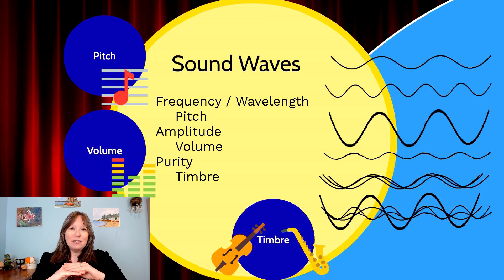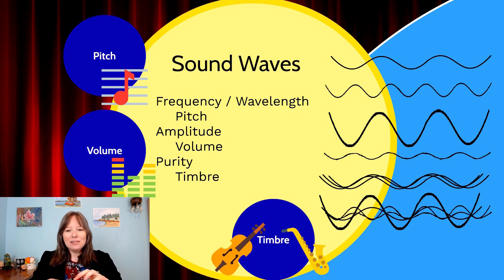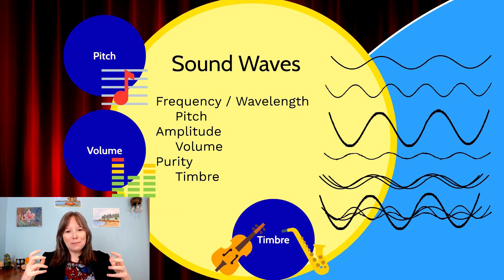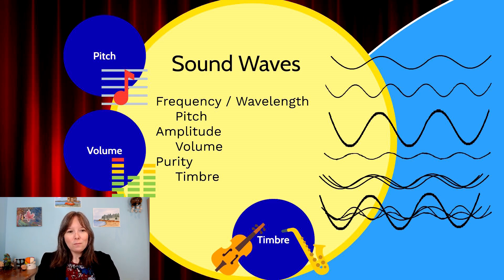Purity relates to timbre. If a sound wave is the isolation of one type of wavelength it's going to be a more pure sound, whereas lots of overlapping tones will produce a different timbre. Timbre can be explained through how the same note at the same pitch can sound very differently on different musical instruments.